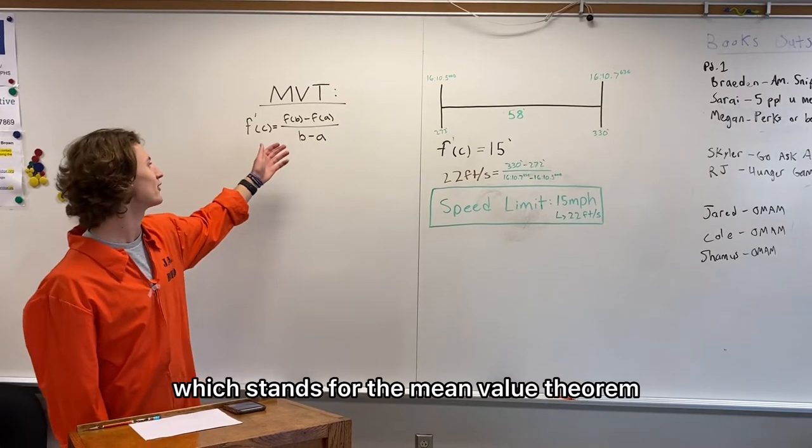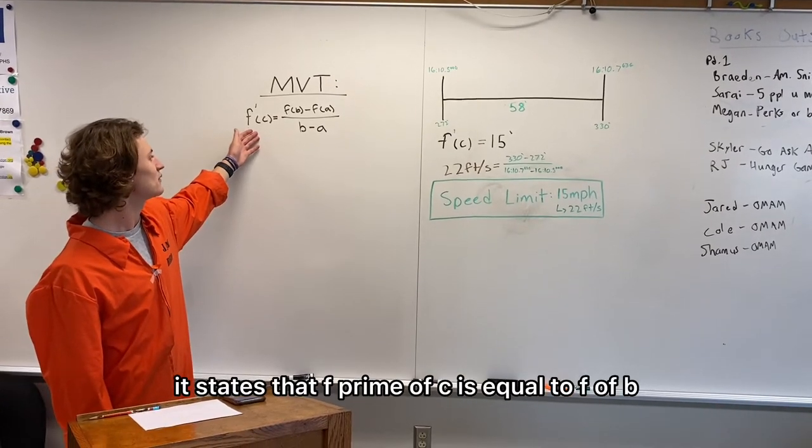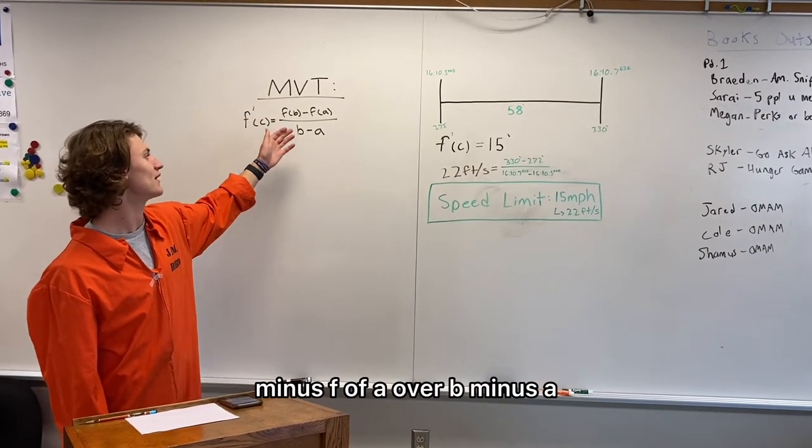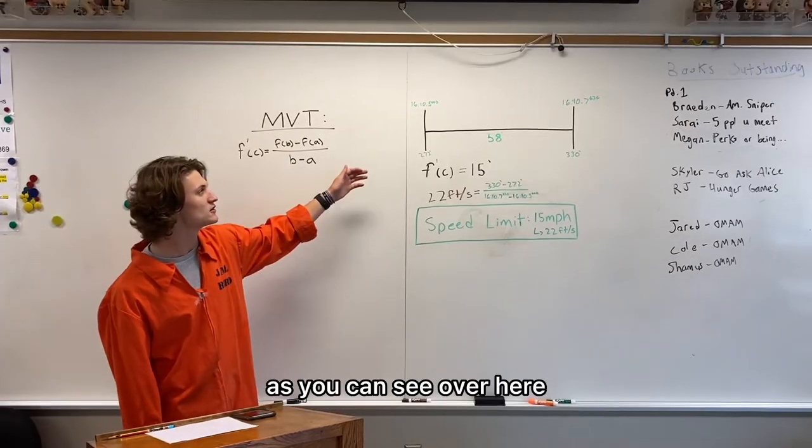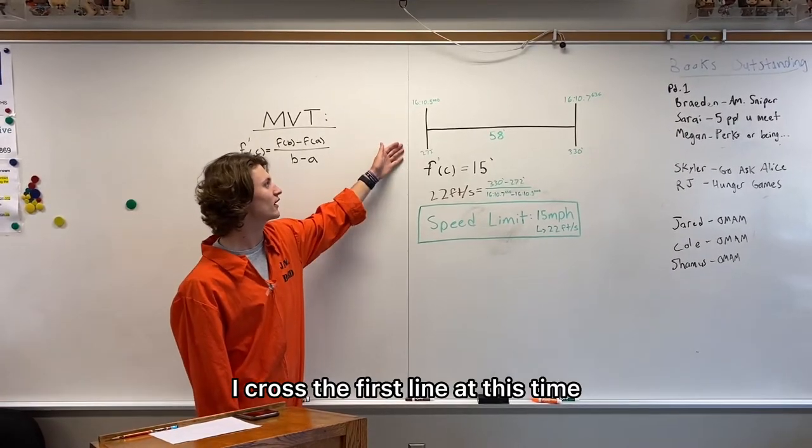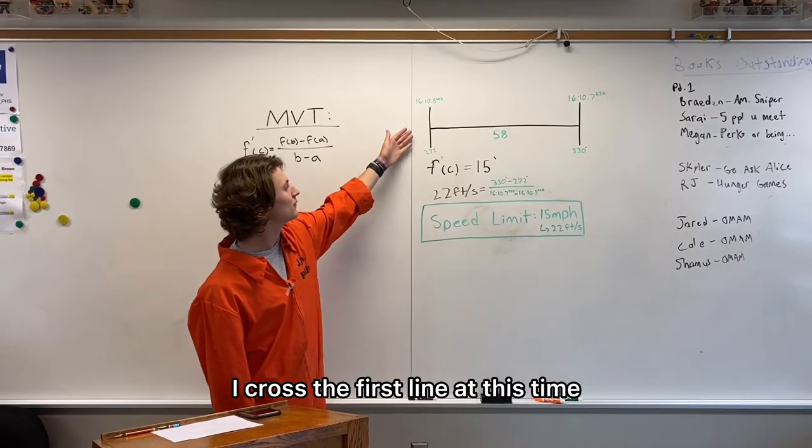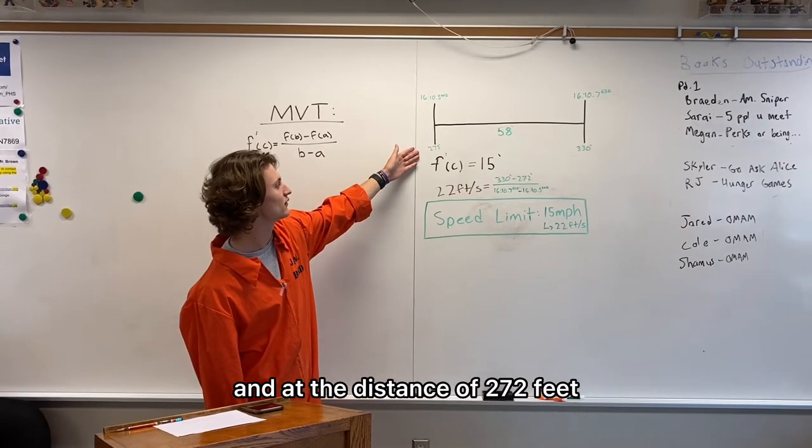If you look here, I have the MVT which stands for the mean value theorem. It states that f prime of c is equal to f of b minus f of a over b minus a. As you can see over here, I crossed the first line at this time and at the distance of 272 feet.